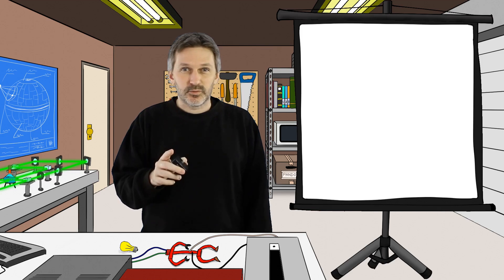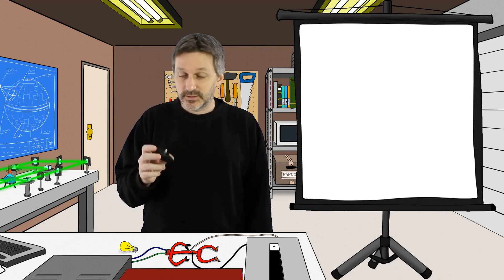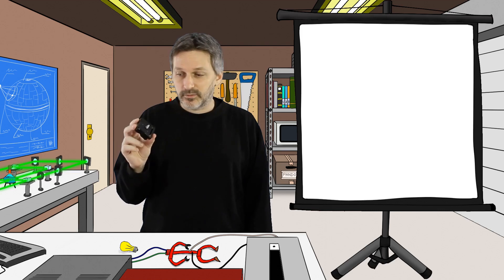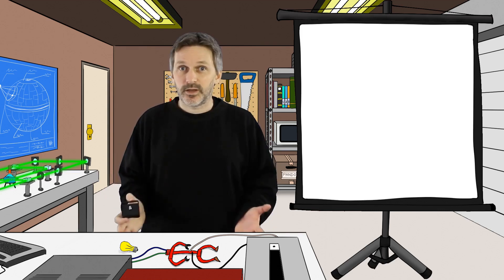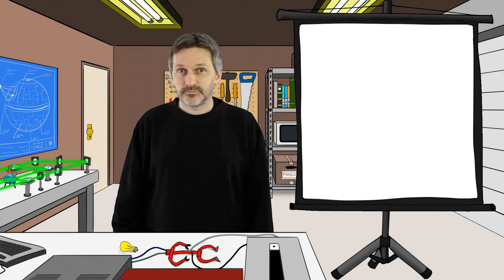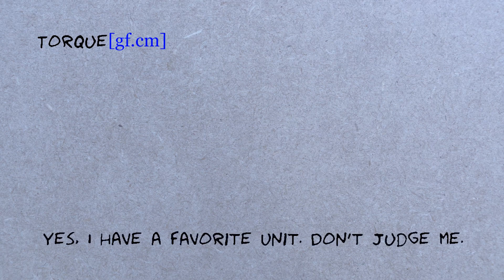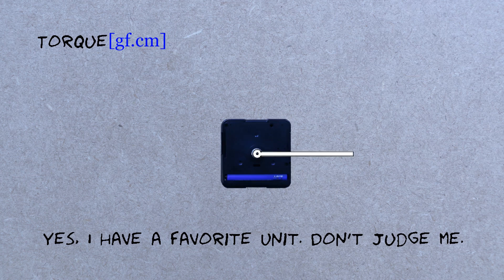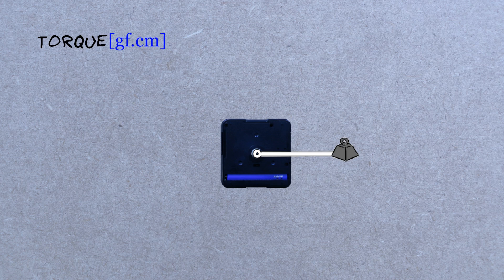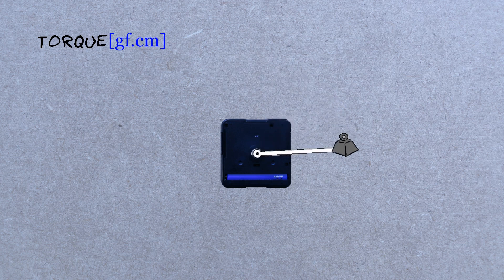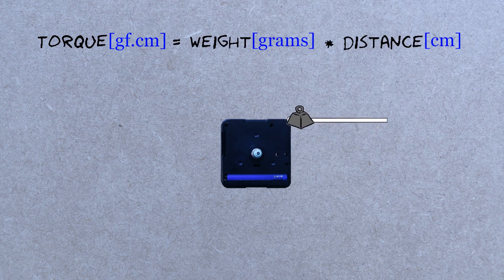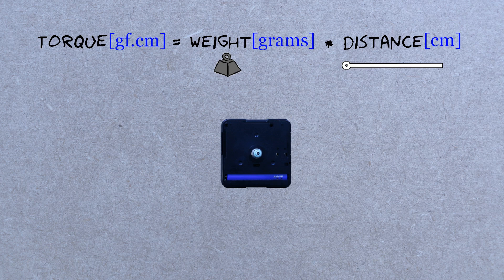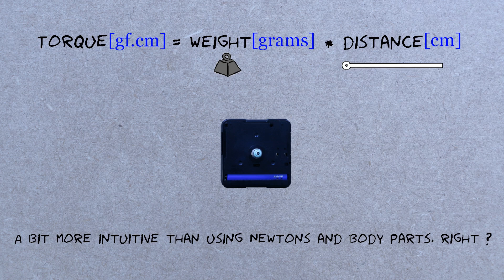So, the stuff that you are probably the most interested in right now is how powerful are these clock mechanisms? How much torque are we actually talking about? My favorite unit is gram force centimeters. Suppose we have a clock motor with just one hand, and a tiny little mass attached to the extremity of that hand. Now, if the motor can make a full rotation, then it can provide a torque that is equal to the weight of that little mass in grams multiplied by its distance to the center of the clock in centimeters. So, just to get an order of magnitude,